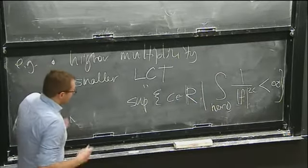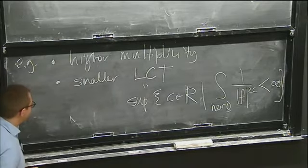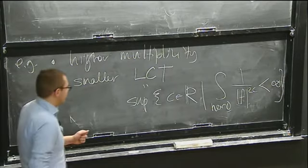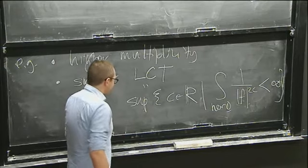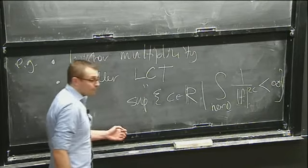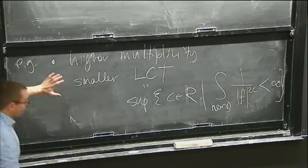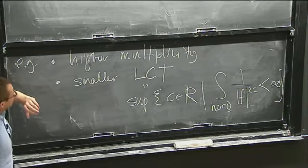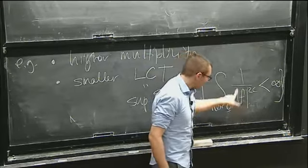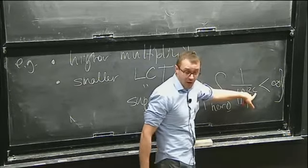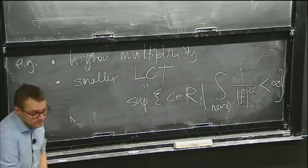I don't have integration here according to our heuristic, because you could have a high multiplicity but a large log canonical threshold. There are some bounds relating these things, but the idea is still that if f has a high multiplicity, it is vanishing very fast, so c has to be small in some way to make this integrable.